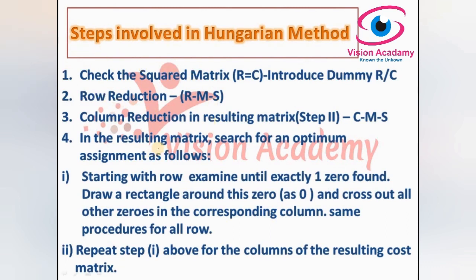We want to determine the optimum assignment solution. These are the steps we need to follow in the Hungarian method, which I already addressed in the second lecture. First, we check the square matrix — whether it is balanced or unbalanced. Then we perform row reduction: identify the minimum cost in each row and subtract all other values from that minimum. The same is then done for column reduction on the resulting matrix from step two.